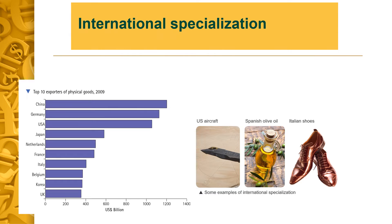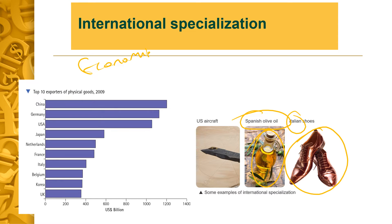Now, we have to explain what international specialization is. For example, when I look at olive oil, I would think of Spain, Lebanon, Jordan, Syria, Greece — mainly Mediterranean countries. When talking about leather shoes or leather jackets, I would think of Italy. So, international specialization is about economies specializing in the production of goods and services they are best able to produce because they have the required factors of production.